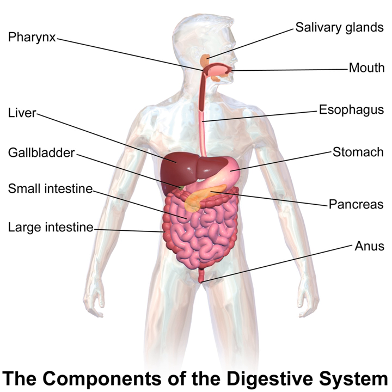Protein digestion occurs in the stomach and duodenum in which three main enzymes — pepsin secreted by the stomach and trypsin and chymotrypsin secreted by the pancreas — break down food proteins into polypeptides that are then broken down by various exopeptidases and dipeptidases into amino acids. The digestive enzymes are mostly secreted as their inactive precursors, the zymogens. For example, trypsin is secreted by the pancreas in the form of trypsinogen, which is activated in the duodenum by enterokinase to form trypsin. Trypsin then cleaves proteins to smaller polypeptides.